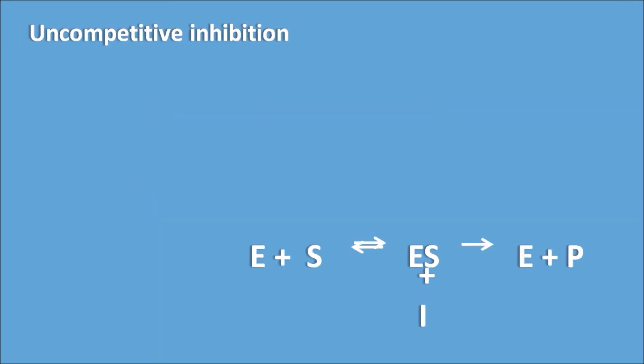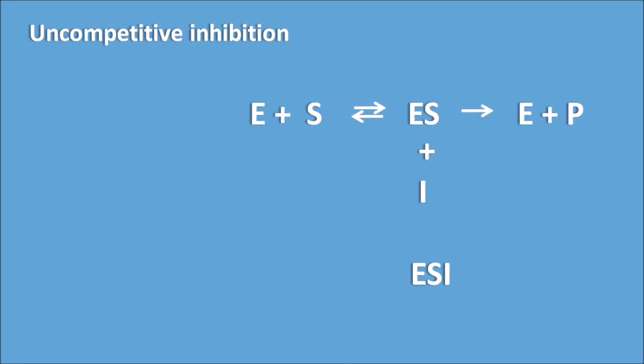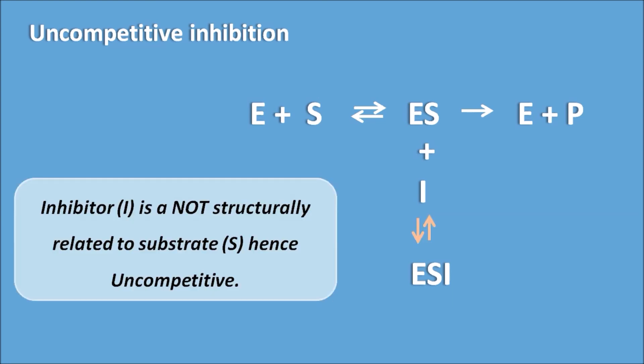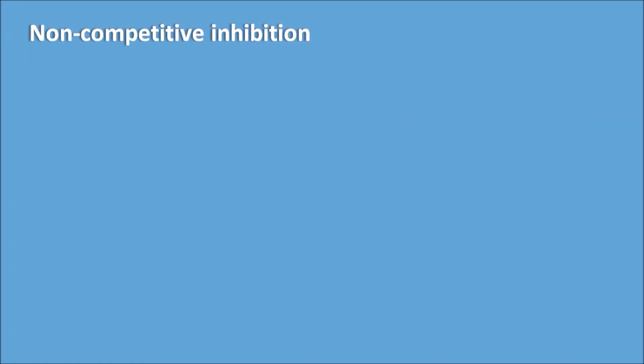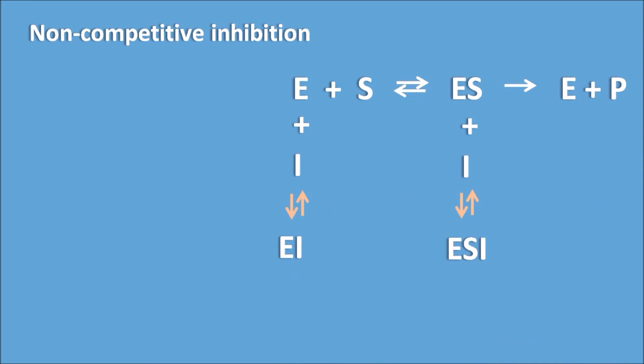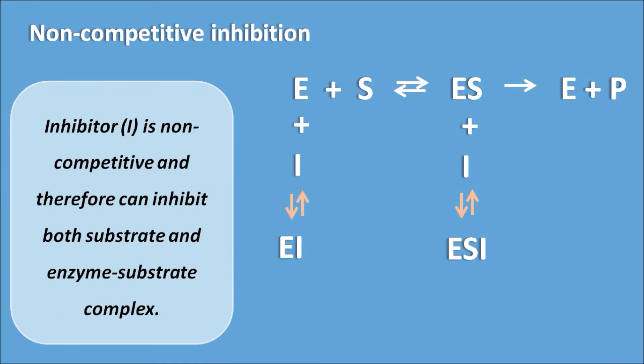In uncompetitive inhibition, the inhibitor binds to the enzyme-substrate complex, thereby inhibiting its conversion into product. The inhibitor is not structurally related to the substrate, hence it is uncompetitive. In non-competitive inhibition, the inhibitor can inhibit both the enzyme and the enzyme-substrate complex, so it can inhibit both the free enzyme and the enzyme-substrate complex — this is called non-competitive inhibition.